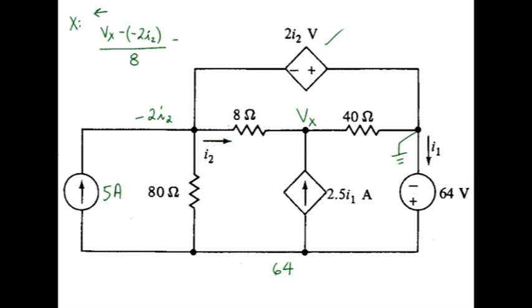And I'll add the southbound current pointing in the other direction. So this is minus 2.5 times i1. And then we'll add the eastbound current. Vx minus 0 because that's the other side of the reference node. Divide that by 40 and set that to 0.